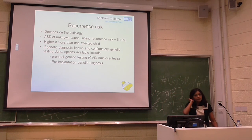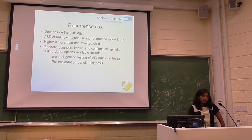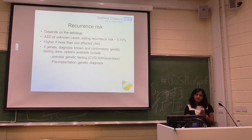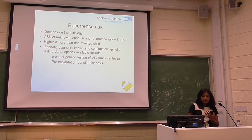Moving on to recurrence risk for future pregnancies in the context of ASD: it would very much depend on the etiology and the unifying diagnosis. Where we've not been able to make a unifying diagnosis or we think this is non-syndromic ASD with no specific genetic etiology, we quote a sibling recurrence risk of 5-10%. The risk would be higher — up to 35% — if they have more than one affected child with ASD. If a genetic diagnosis is known and confirmatory genetic testing has been done, it opens up options such as prenatal genetic testing and pre-implantation genetic diagnosis.